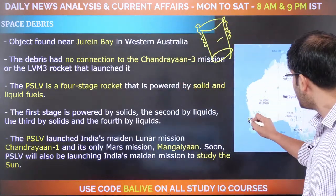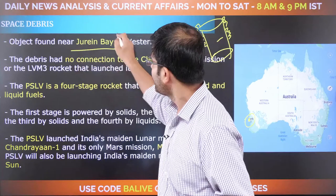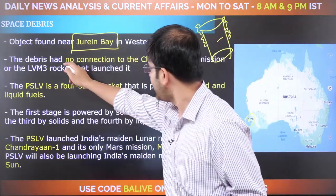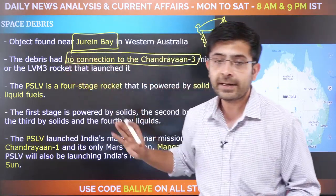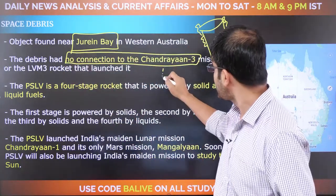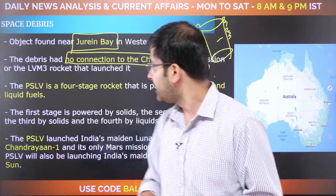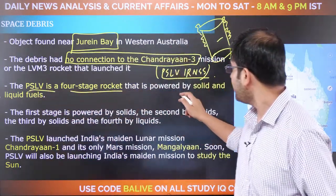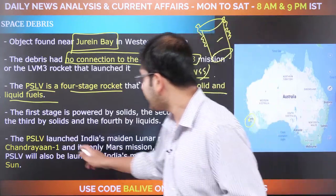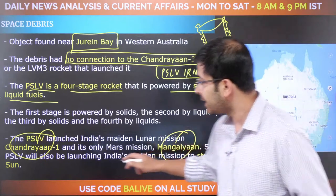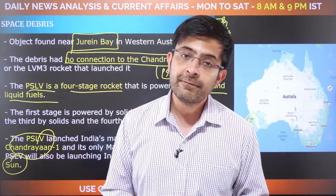It was found near Perth at a bay called Jurien Bay — this is where that ISRO entity was found. Clearly not connected to Chandrayaan. PSLV is a four-stage rocket powered by solid and liquid fuels and has operated most of India's major missions. Chandrayaan-3 was on LVM-3, one of India's heaviest launch vehicles. However, Chandrayaan-1, Mangalyaan, and today's Aditya L1 mission all use PSLV. The first stage uses solids, second liquids, third solids, and fourth liquids — it alternates.